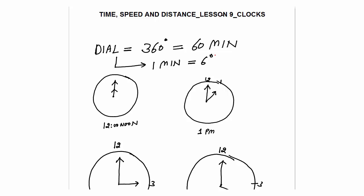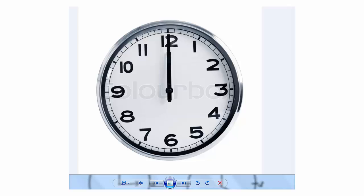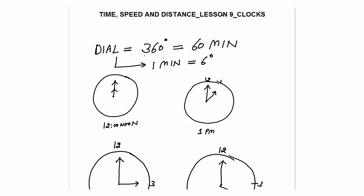Hello, this is Time, Speed and Distance Lesson 9. In this lesson I will discuss a very interesting topic — clocks. Now you can see the clock, with both the hour hand and minute hand at the same point at 12 noon. Both hands move 360 degrees in different times. The complete dial of 360 degrees can be divided into 60 minutes. One minute of the dial represents 6 degrees.